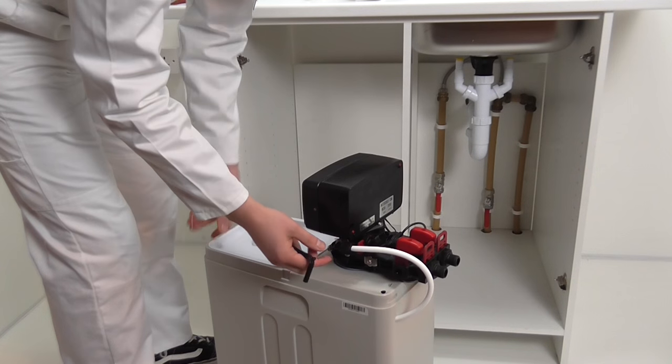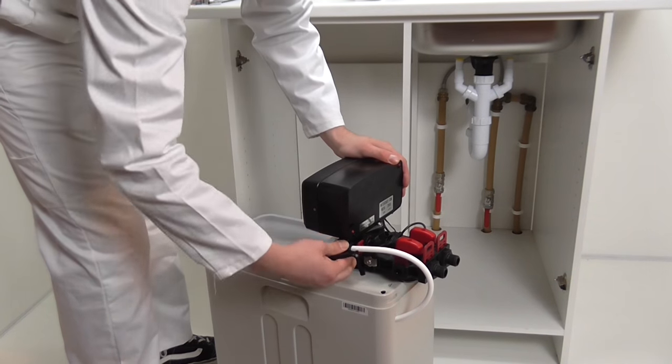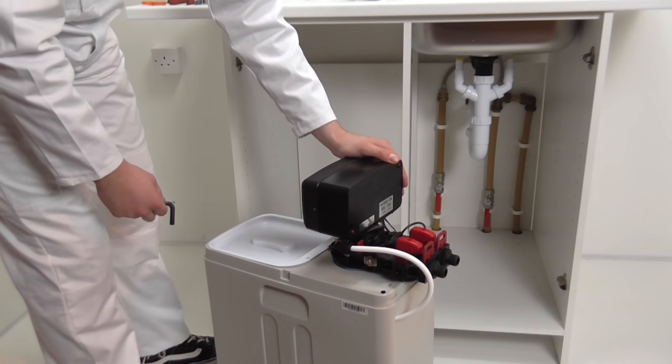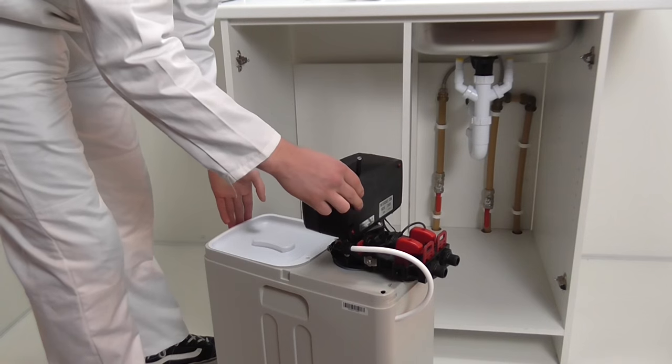The brine pipe joins the control valve with a black plastic nut and a brass nut. Check that these nuts are fully tightened. A loose seal on these nuts will cause the softener to malfunction.